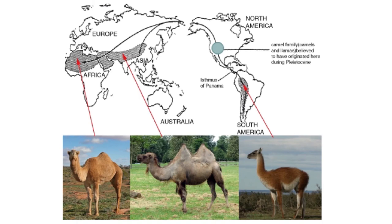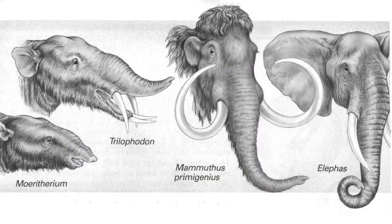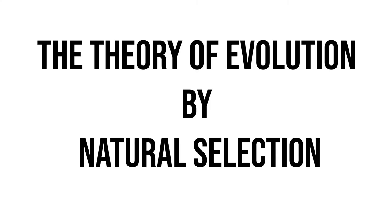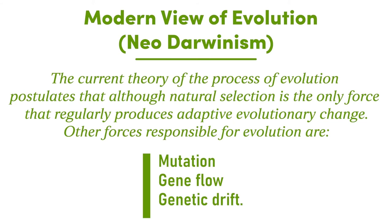Moving on to the modern view of evolution — after Darwin put forward his theory, scientists who worked on the theory of evolution were able to support the theory of natural selection and concluded that there are forces responsible for evolution. The first force is natural selection, which is the theory put forward by Darwin. Beside natural selection, there are other things that can bring about evolution in organisms: mutation, gene flow, and genetic drift.